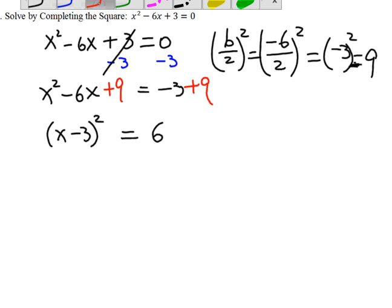Now, we can apply the square root property. To undo the square, we're going to take the square root on both sides. But don't forget plus minus. So, we get x minus 3 equals plus minus radical 6.